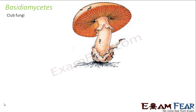Basidiomycetes are commonly known as club fungi. They are called club fungi because of their club-shaped fruiting bodies. The best example, as you can see in the picture, is mushroom, which is edible. The cap of a mushroom looks like an umbrella — that is the reproductive structure containing the fruiting body, which gives it the club shape.